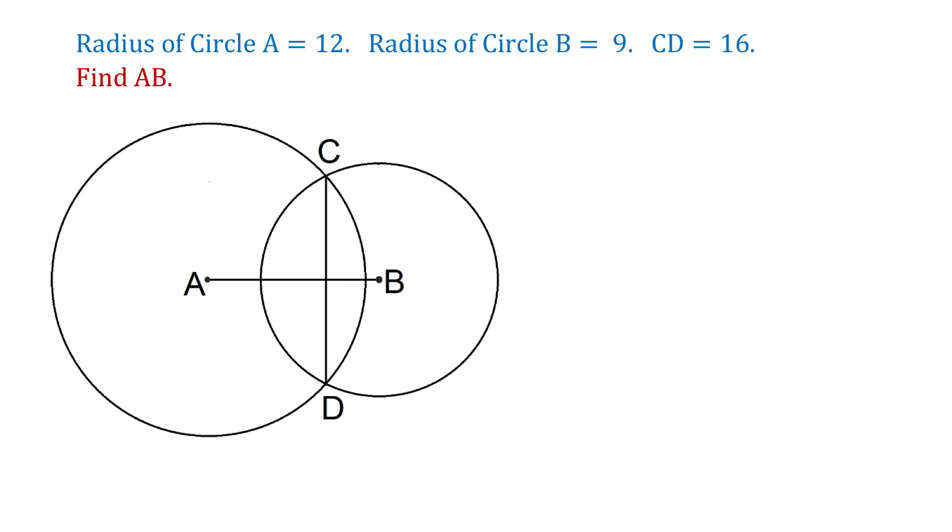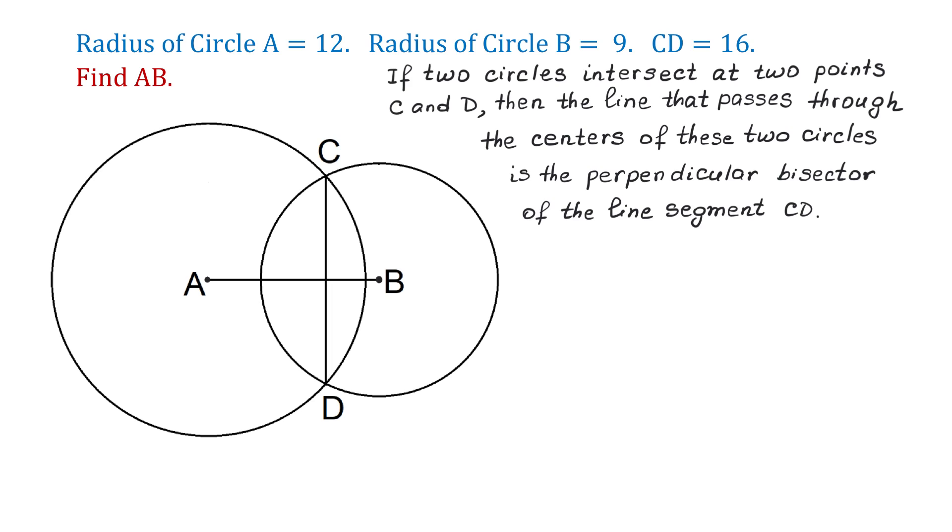Now, when it comes to intersecting circles, then the following is true. If two circles intersect at two points C and D, then the line that passes through the centers of these two circles is the perpendicular bisector of the line segment CD. This means that here we will have right angles, and let this point be point E.